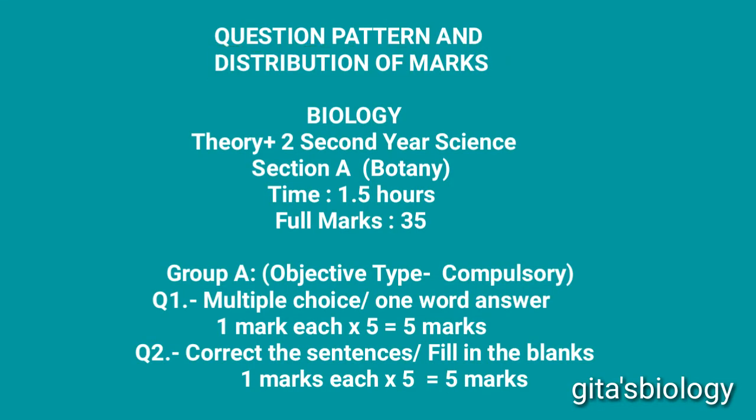You should know that biology divides into two sections: Section A Botany and Section B Zoology. The biology exam is held together — Section A Botany is one and a half hours and Section B Zoology is one and a half hours. Section A Botany has full marks of 35, and the questions divide into three groups.